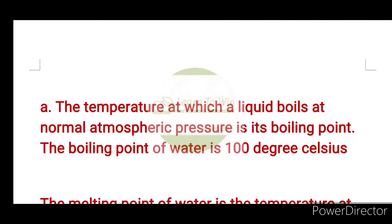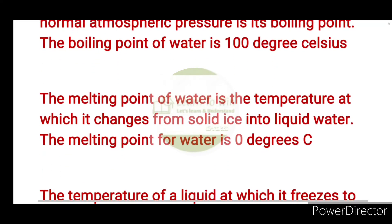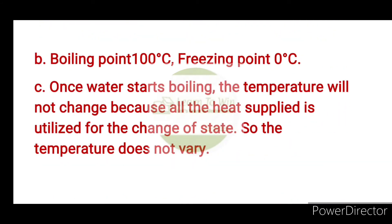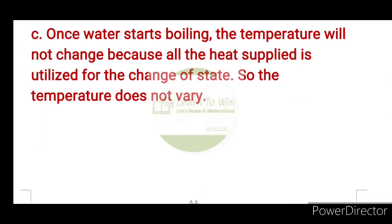The boiling point of water is 100 degree Celsius. The melting point is the temperature at which water changes from solid ice into liquid water. When the water starts boiling, the temperature will not change, because all the heat supplied is utilized for the change of state. So the temperature does not vary.